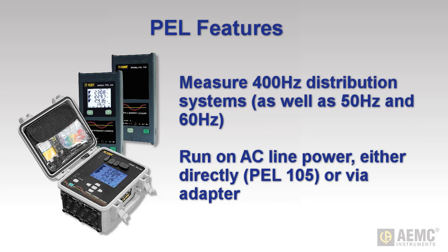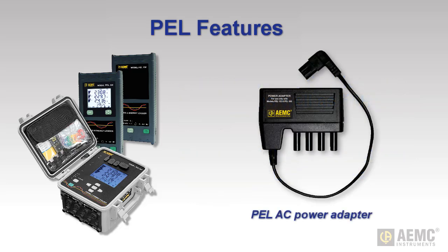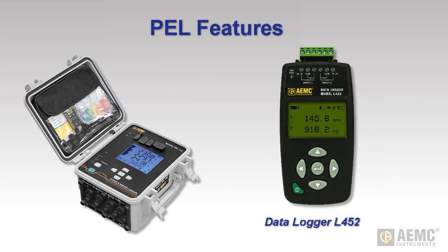In addition to 50 and 60 Hz, PEL instruments work with 400 Hz distribution networks and can operate on incoming line power, either directly or through an add-on accessory depending on model. The PEL 105 can also connect to the data logger model L452, recording measurements provided by multiple instruments.